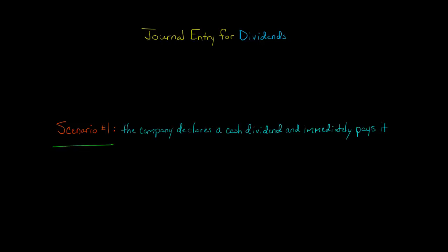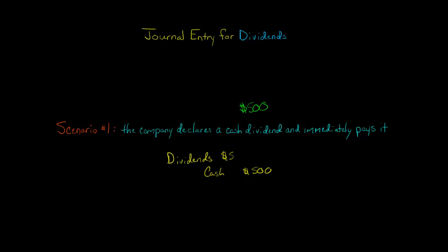Let's go with the first scenario. The company has declared a cash dividend — let's say it's a $500 cash dividend — and we have to journalize that. We're going to credit cash for $500 because the company is paying out $500 of cash immediately. We're going to debit the dividends account for $500 and credit cash for $500. That's our entry.